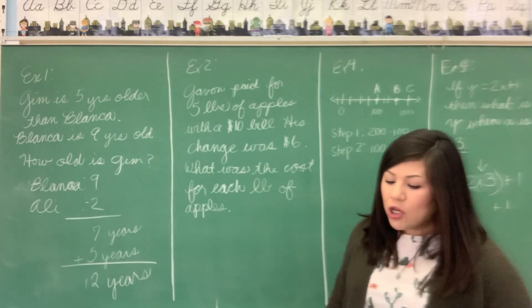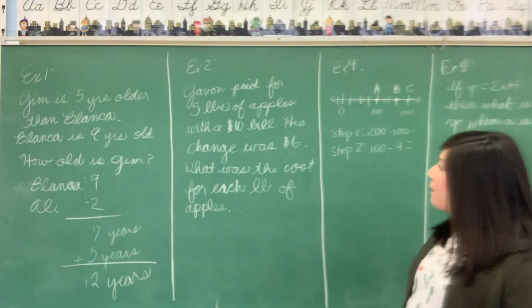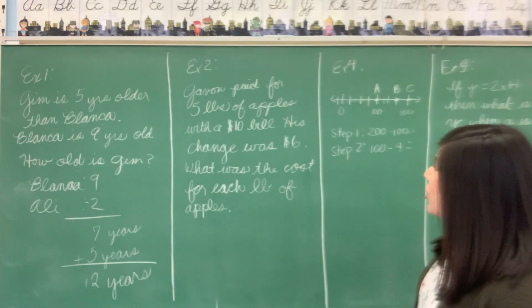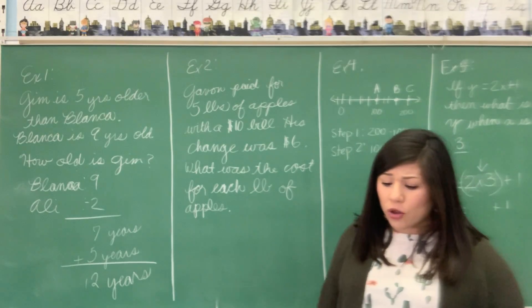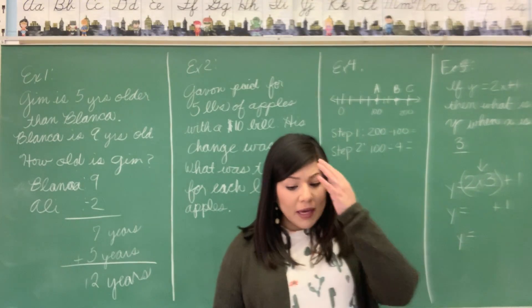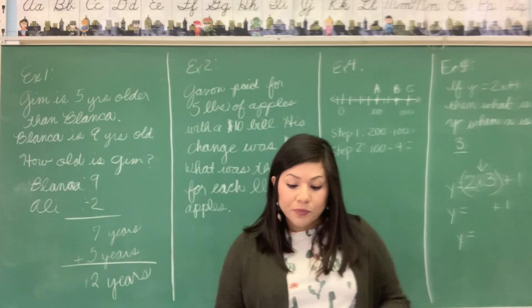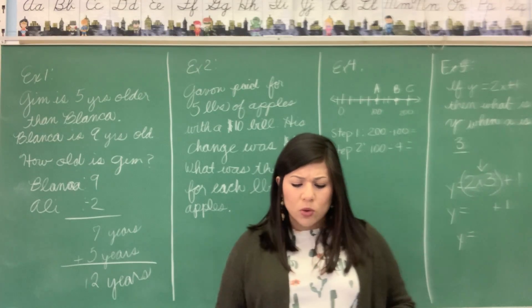Alright, let's look at example two. Devon paid for five pounds of apples with a $10 bill. His change was $6. What was the cost for each pound of apples? So the first step we're going to do here, we're going to begin by finding out how much all five pounds of apples cost.